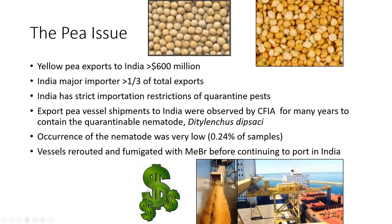Those vessels needed to be rerouted on the way to India in the Pacific Ocean and fumigated with methyl bromide to kill any pests or nematodes present in the hold. Then the ship could go on to port in India and sell the contents. But you can imagine that created havoc — a lot of money to fumigate and then the delay. This is where we got into the picture here at the University of Manitoba. The occurrence seemed low, and if the nematode really liked pea, it should be found at a higher frequency.